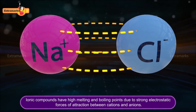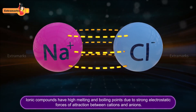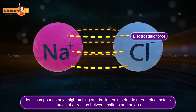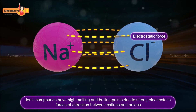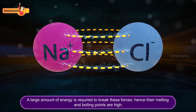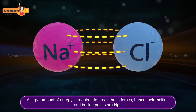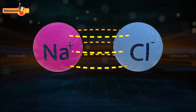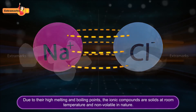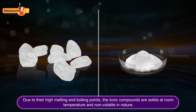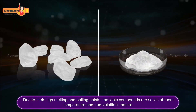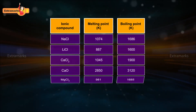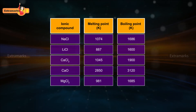Ionic compounds have high melting and boiling points due to strong electrostatic forces of attraction between cations and anions. A large amount of energy is required to break these forces, hence their melting and boiling points are high. Due to their high melting and boiling points, the ionic compounds are solids at room temperature and non-volatile in nature. The melting and boiling points of some ionic compounds are shown here.